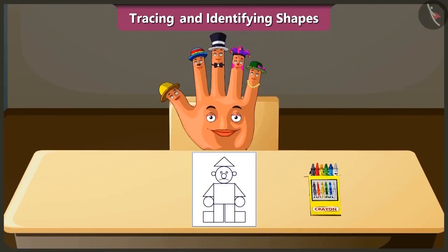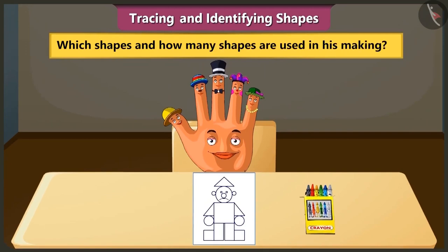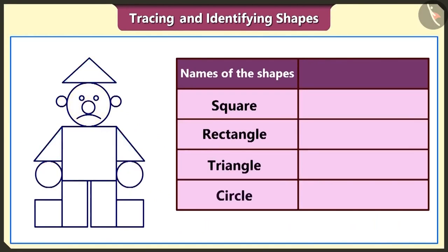Hello friends, look, this is a picture of a doll made using shapes. But why is this doll sad? Because the doll wants to know which shapes and how many shapes are used in his making. The square, the rectangle, triangle and circle are used to make this doll. Let's now tell him the number of shapes used in his making. We can make him smile.